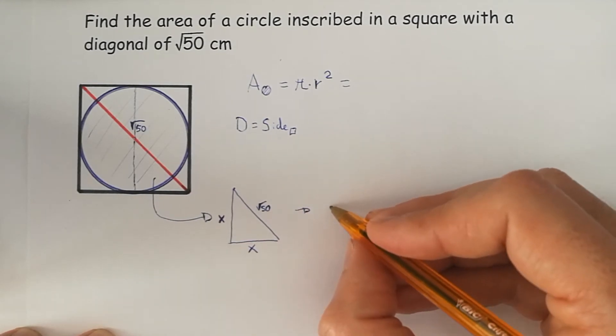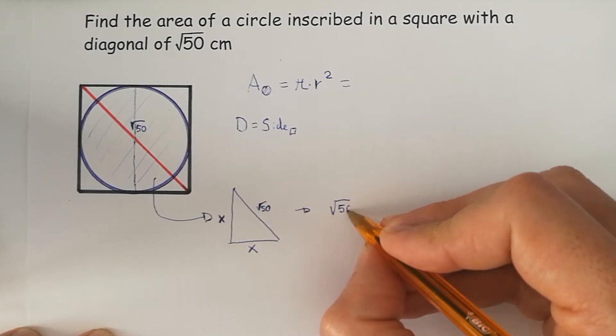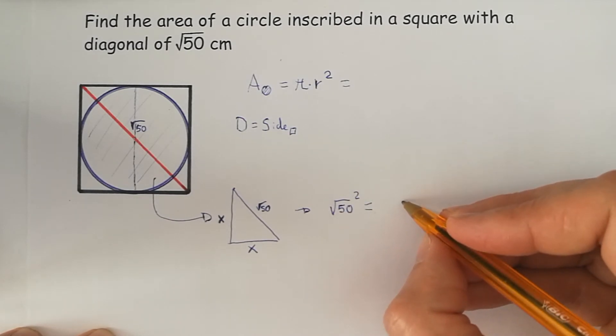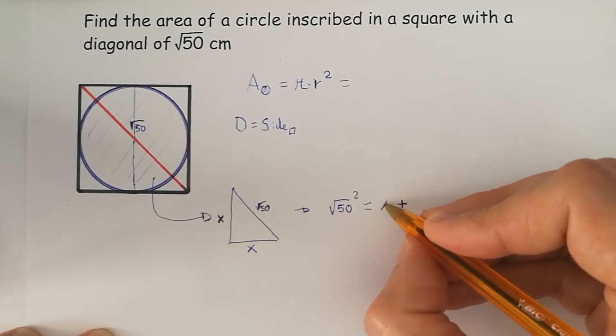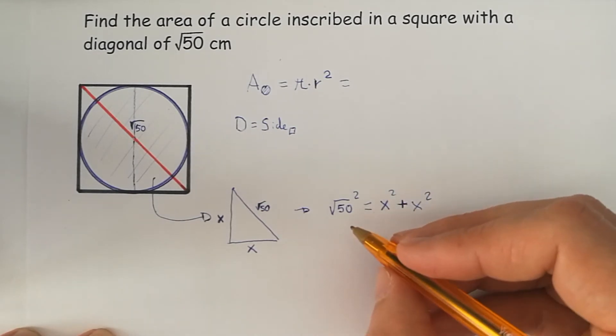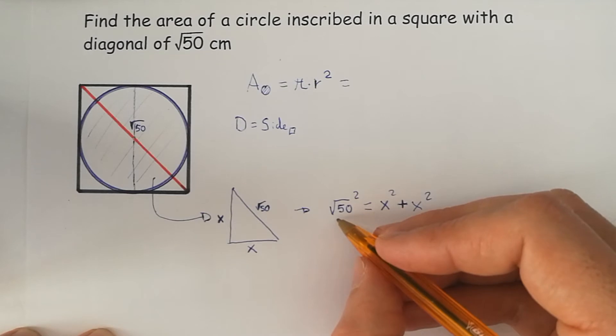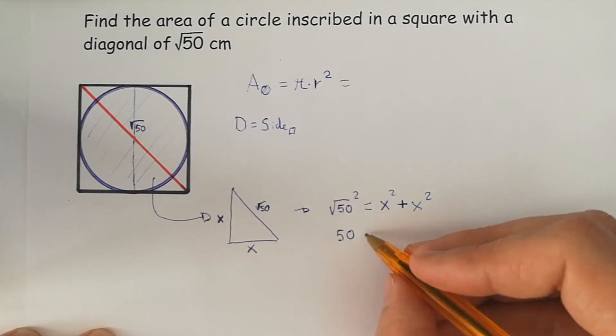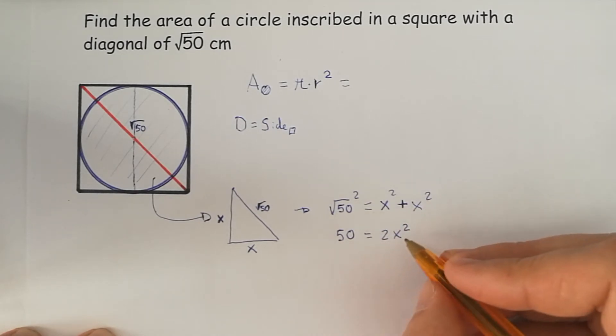So the hypotenuse squared equals the sum of the legs squared. We go on with this and we see that 50 is the same as 2 times x squared. If we divide by 2, we get 25 here and x squared on the other side.